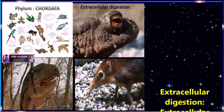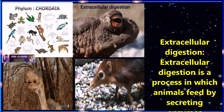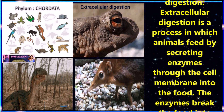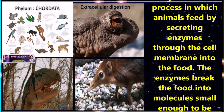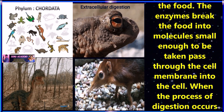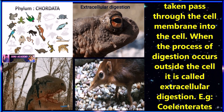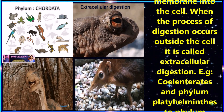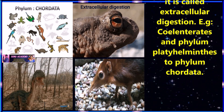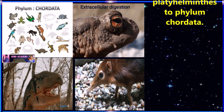Now let us see what is extracellular digestion. Extracellular digestion is a process in which animals feed by secreting enzymes through the cell membrane into the food. The enzymes break down the food molecules into pieces small enough to be taken through the cell membrane into the cell. When the process of digestion occurs outside the cell, it is called extracellular digestion. Examples include coelenterates and phylum platyhelminthes up to phylum chordata.